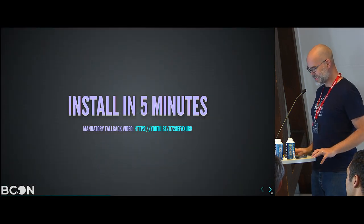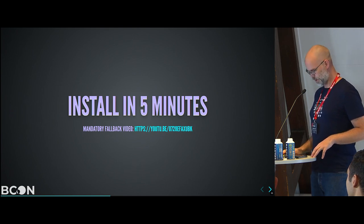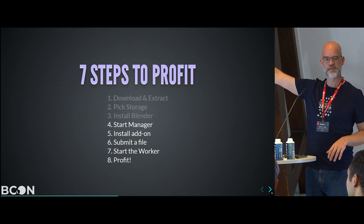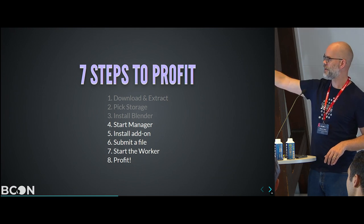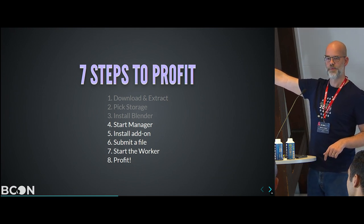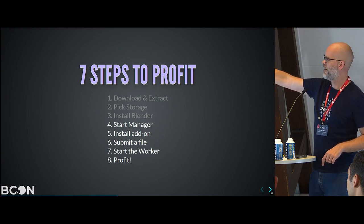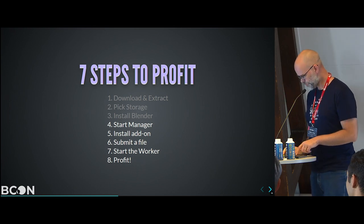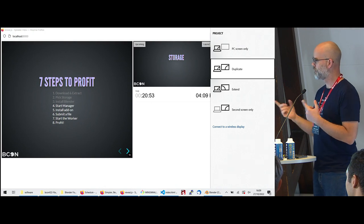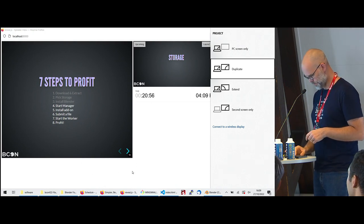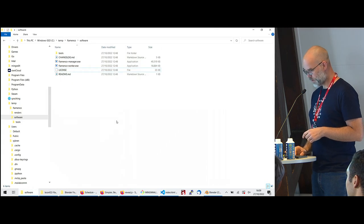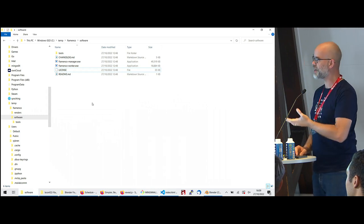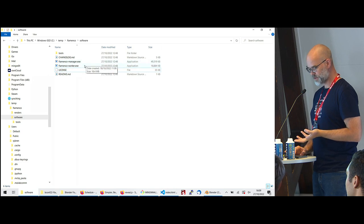Let's get this running — we'll follow these steps except the gray ones because I already did those. I already downloaded Flamenco from the website, picked a storage location at C:\temp, and already have Blender on my machine. So we'll start from starting the manager. When you download Flamenco you get a Flamenco Manager and a Flamenco Worker executable.